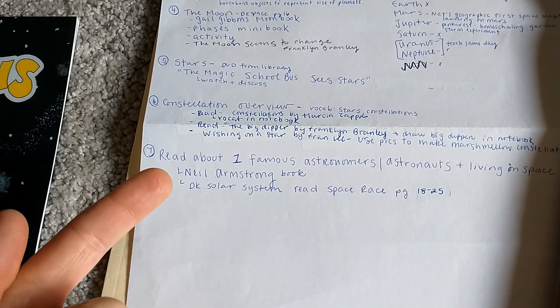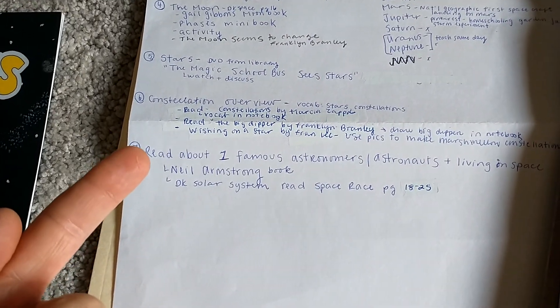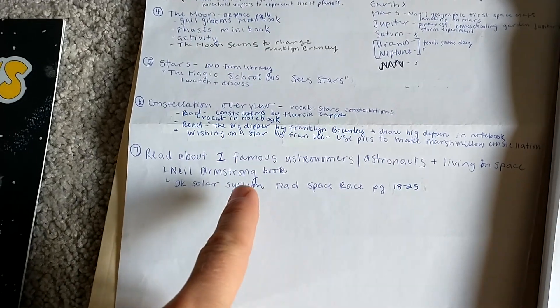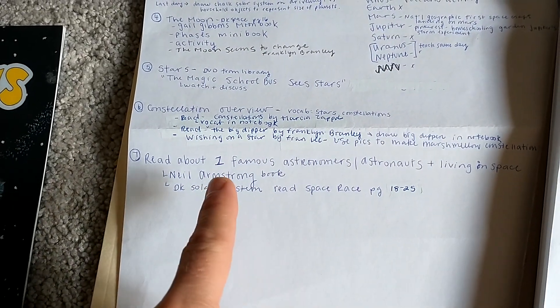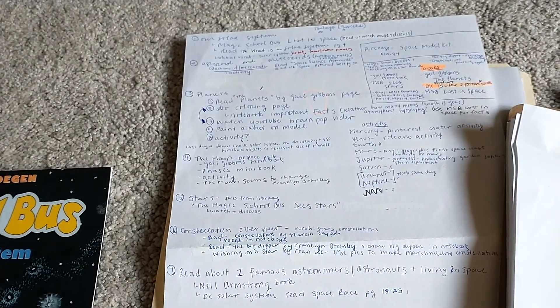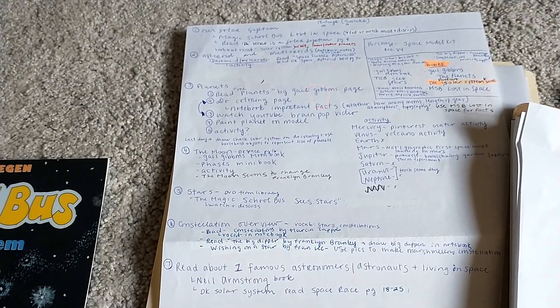And then I want to read about one famous astronaut or several famous astronauts. There's a Who Was Neil Armstrong book that we'll use. So that'll probably take us a couple days to read. And that is just my basic introduction to the solar system for my kindergarten and second grader.